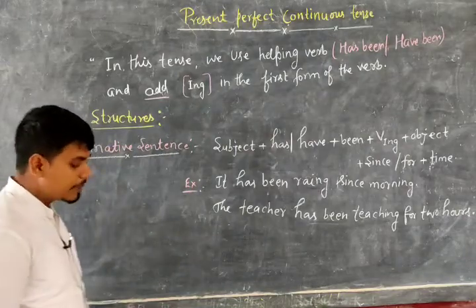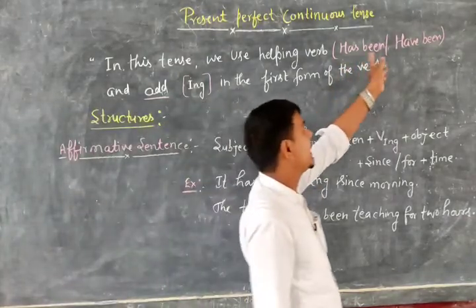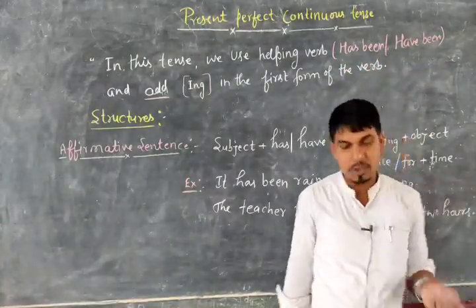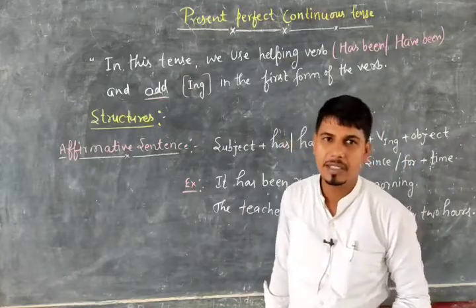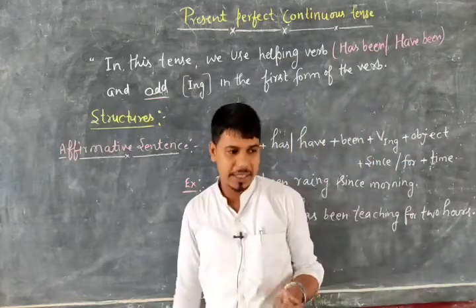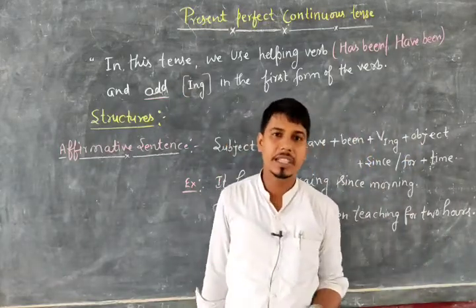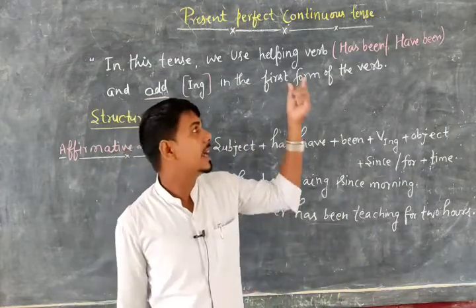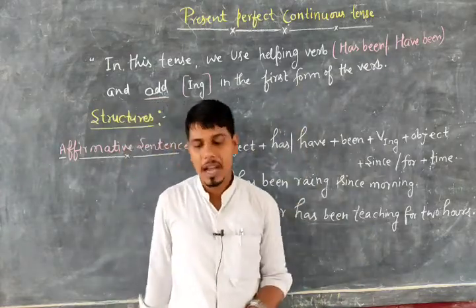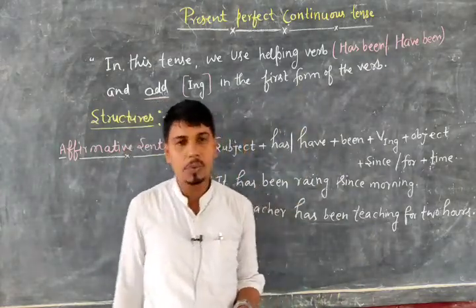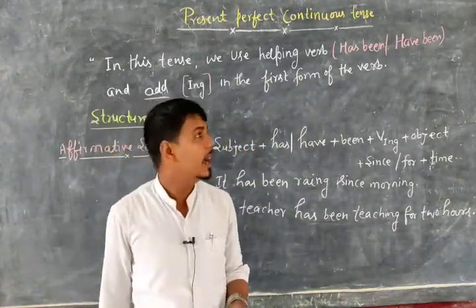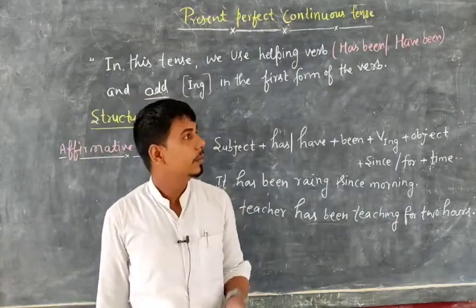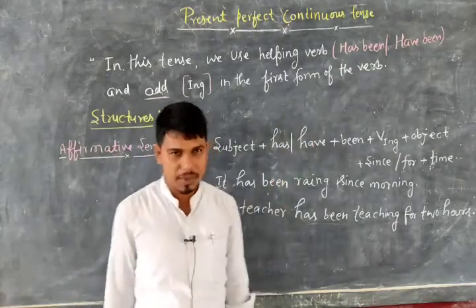If we talk about the difference between 'has been' and 'have been' — as I have taught you already in the present perfect tense — with 'he,' 'she,' 'it,' and similar singular nouns, we use 'has been.' And with 'you,' 'we,' 'they,' 'I,' and plural nouns, we use 'have been.'